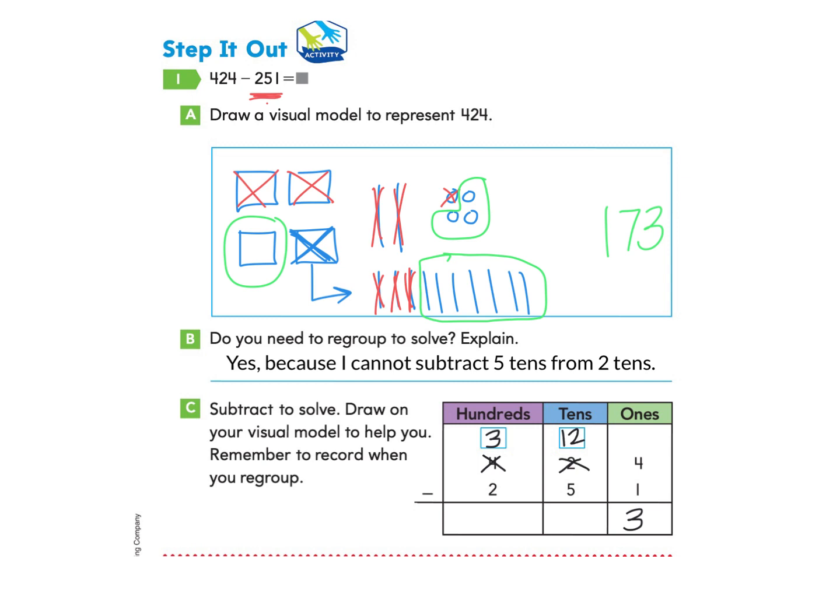So now we can subtract 12, take away five, which is what we did. We crossed out these five and that let us have seven left over. So we can record that here, seven. The last thing we did was we said there are three hundreds. We need to take away two. So we had three hundreds and we crossed out two of them in red. And what did we have left? We had one.